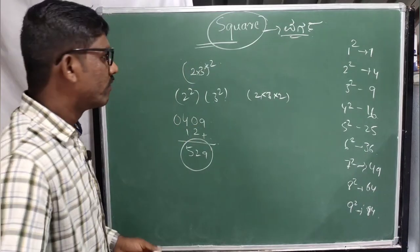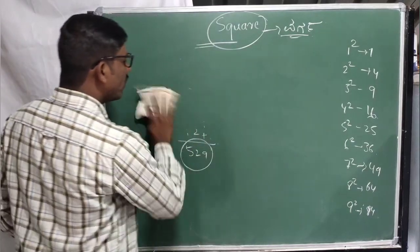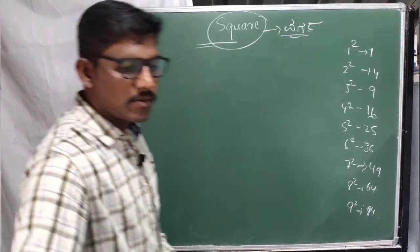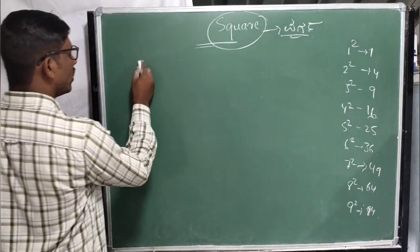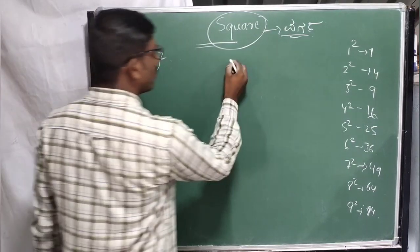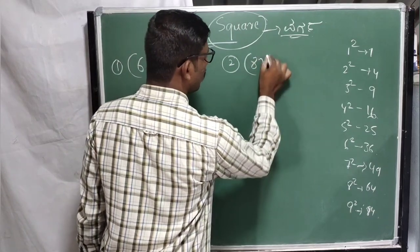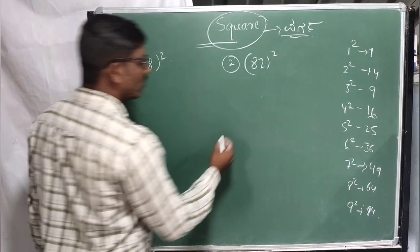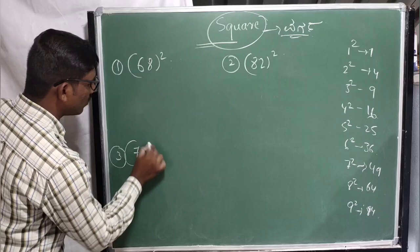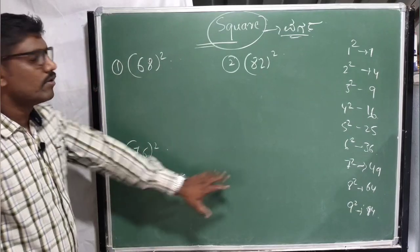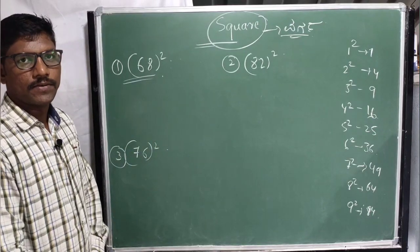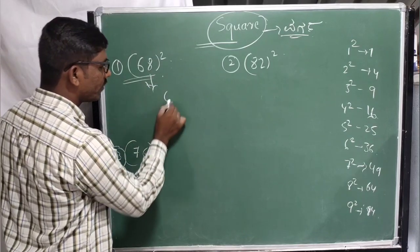So let's take a table. For example, we will work through problems. We will read the method. You will know the problem. The problems are: the 2 of the square is in the square. The 1st question, the next question, the 2 of the square is in the square. The third question is 76 squared. The second question and first question involve 6 squared.